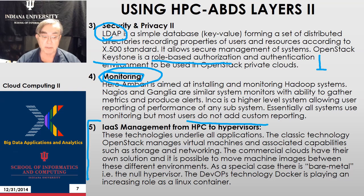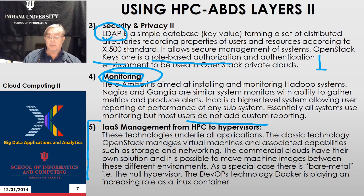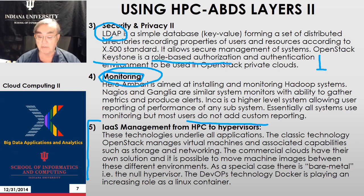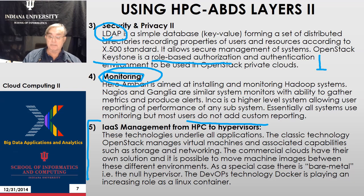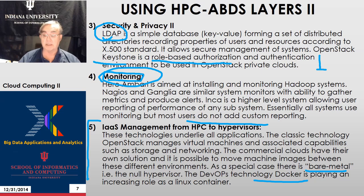Now we start at the bottom of the stack with infrastructure as a service management, which can include bare metal — no hypervisor required. OpenStack is the dominant technology in the US; OpenNebula is used in Europe. It manages virtual machines, computing, storage, and networking. Commercial clouds have different proprietary solutions, but there are interoperability standards allowing you to move machine images between environments. Docker is a technology making it much easier to use Linux containers to produce relatively high-performance secure environments.